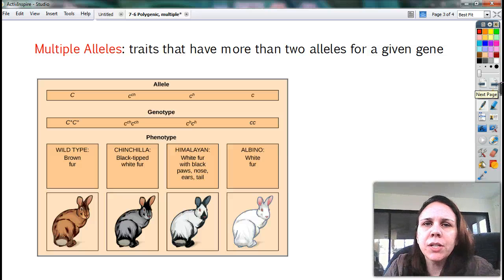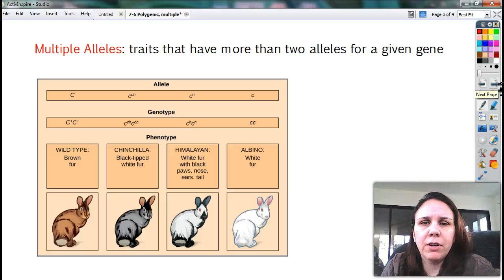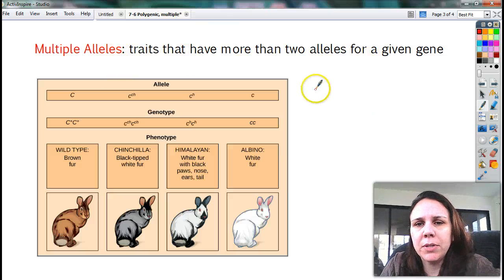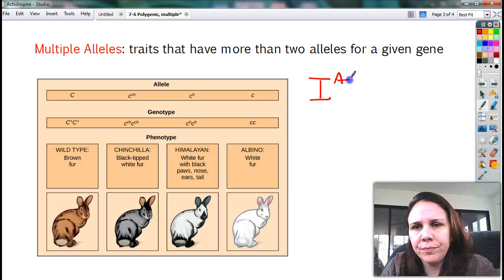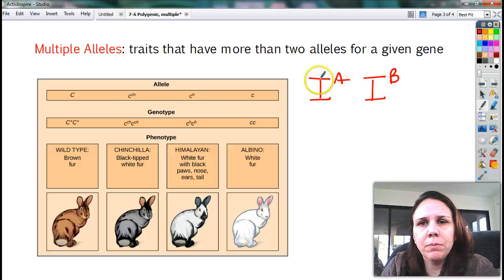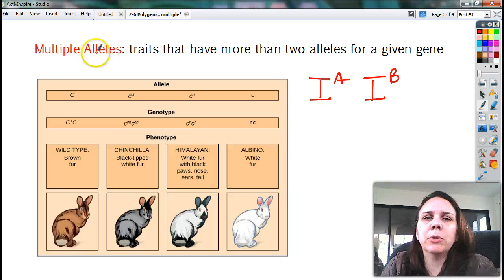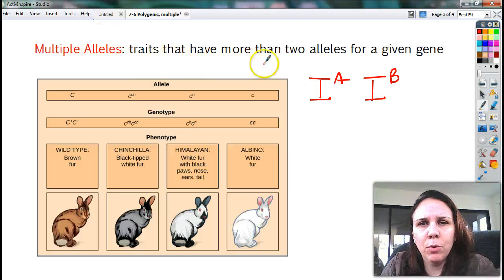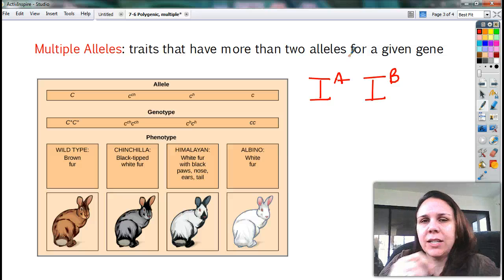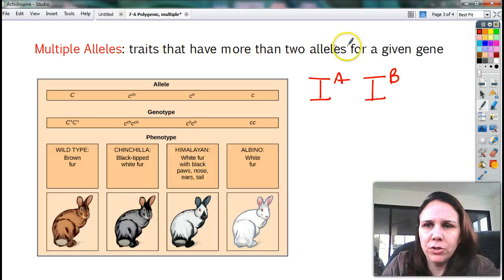Now, multiple alleles is another slight variation of how things get inherited. Multiple alleles, kind of like, remember how we said for blood type, we have a big I that has an A and a big I that has a B. Well, there's two alleles for the same gene, right? So that's kind of what a multiple allele is. It's a trait that has more than two alleles for one particular given gene.